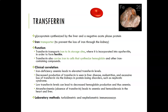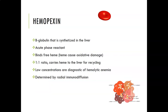Atransferrinemia — the total absence of transferrin — leads to anemia for the same reason, but also hemochromatosis in the heart and liver, because iron can still accumulate in those organs and cause damage. Hemochromatosis refers to the accumulation of iron in the liver. The lab methods for transferrin are turbidimetric and nephelometric immunoassays.